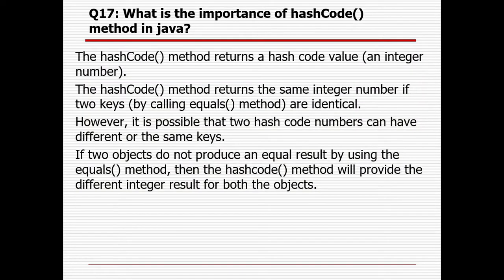What is the importance of the hashCode method in Java? The hashCode method returns a hashcode value — an integer number. The hashCode method returns the same integer number if two keys are identical. However, it is possible that two hashcode numbers can have different or same keys. If two objects do not produce an equal result using the equals method, then the hashCode method will provide different integer results for both objects.